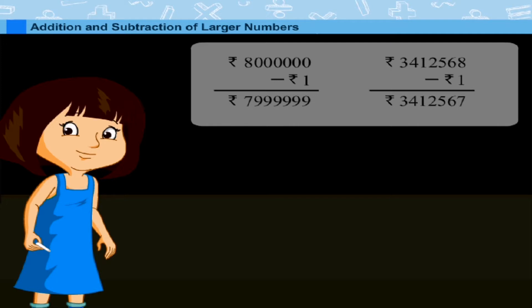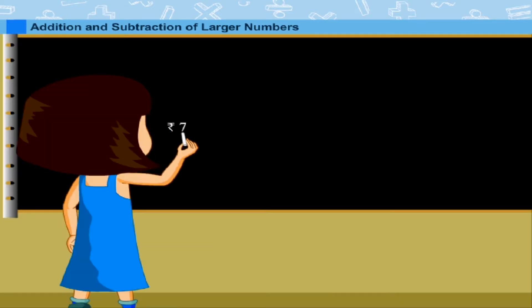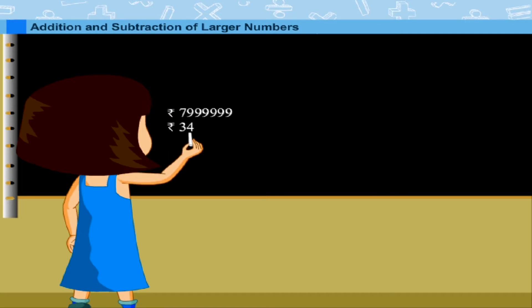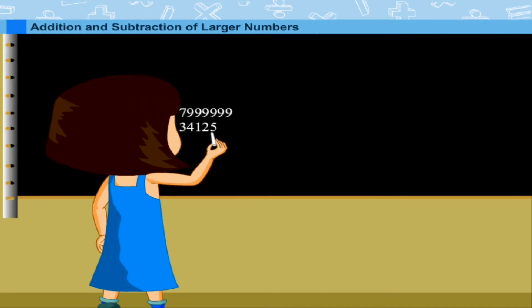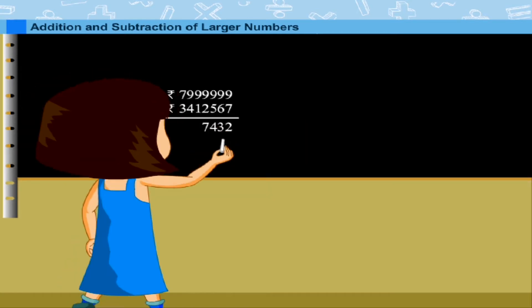For this, we first subtract 1 from both amounts. This makes them 79 lakhs 99,999 rupees and 34 lakhs 12,567 rupees. Now we subtract the two: 79 lakhs 99,999 rupees minus 34 lakhs 12,567 rupees equals 45 lakhs 87,432 rupees.